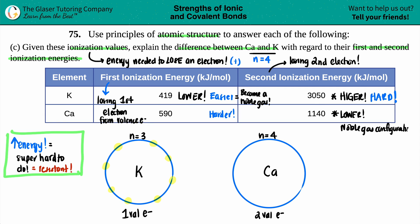So with ionization energy: the higher the number, the more resistant - it's super hard to do and the element probably doesn't want it done. Once calcium loses n equals four it goes down to n equals three, and now they're both noble gases. The lower the number means it's super easy because it's favorable - they're going to become a noble gas.